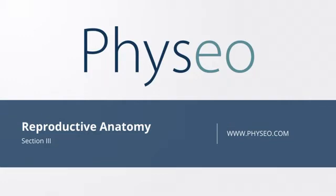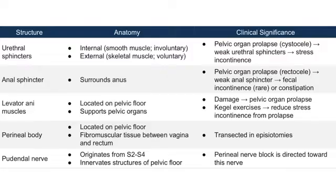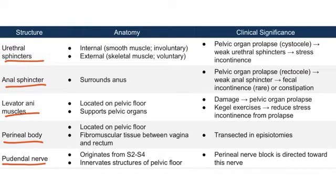Welcome to section 3 of reproductive anatomy. In this section, we will discuss the important structures of the pelvic floor. Here is a table summarizing the structures we will address in this lecture: the urethral sphincters, the anal sphincter, the levator ani muscles, the perineal body, and the pudendal nerve. Let's start with the urethral sphincters.